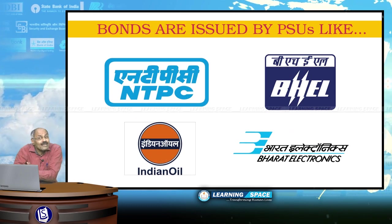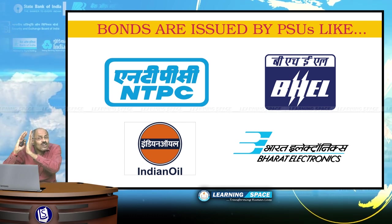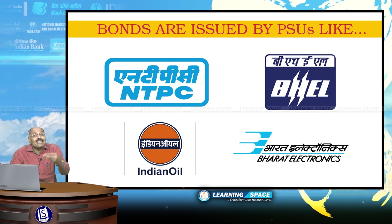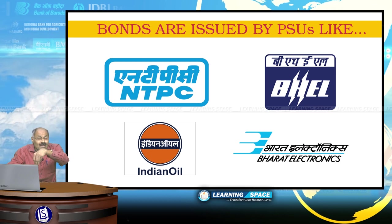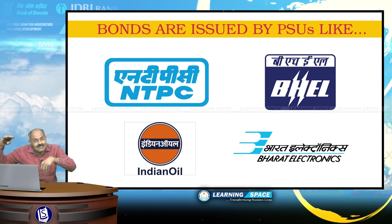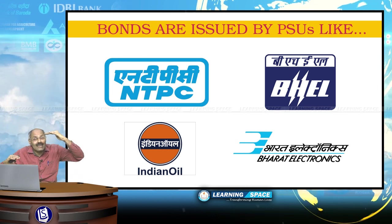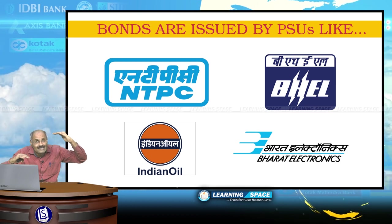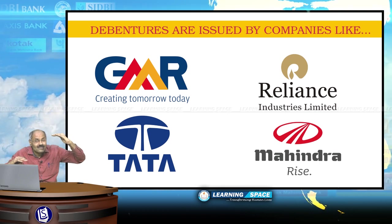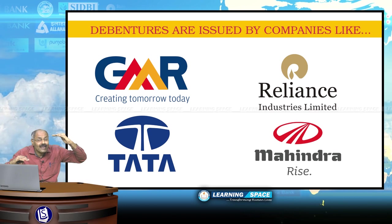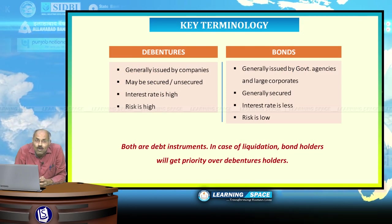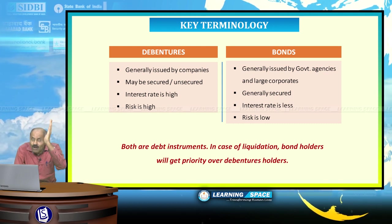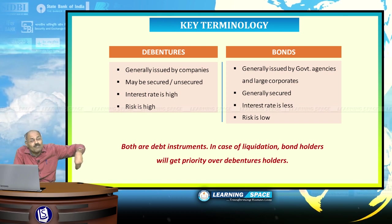In summary: bonds are issued by government or public sector entities and are high quality with lower risk, while debentures are issued by private sector companies and carry higher interest and higher risk. Both are debt instruments — you are giving a loan to the company and they will pay you interest irrespective of the company's profit or loss.